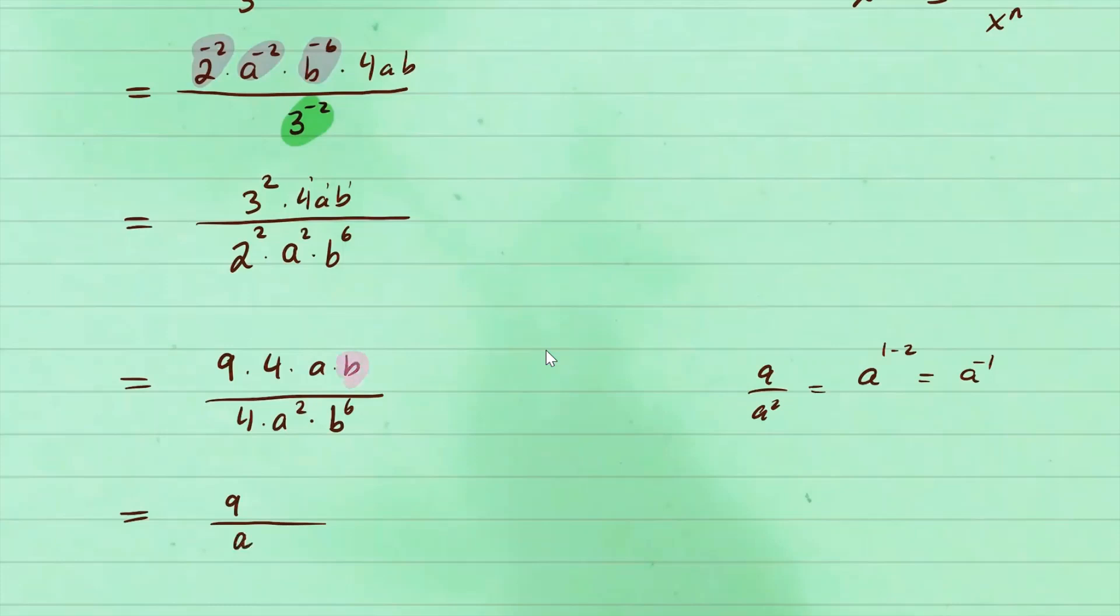Now for the b's, we'll do the same thing. You have b to the 1 over b to the sixth. This is b to the 1 minus 6, which is b to the negative 5. Again, instead of writing it here, we'll make it a positive. So that will go on the bottom. And that will be our final simplified answer.